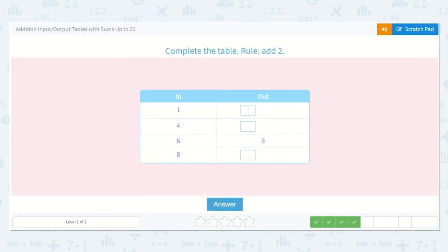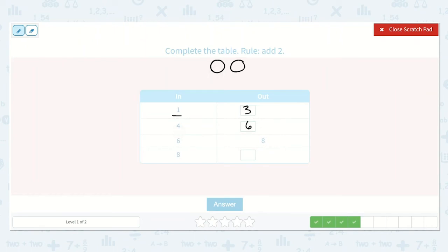Okay, we are adding two again. Let's draw those two dots again and use those to count on. One, two, three. Four, five, six. Six, seven, eight. Eight, nine, ten.